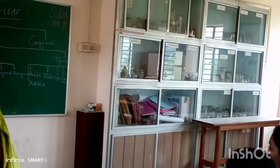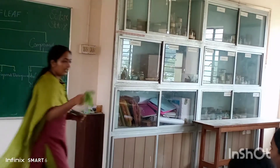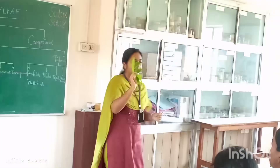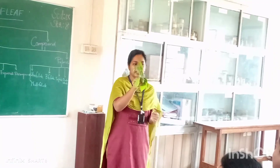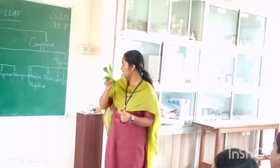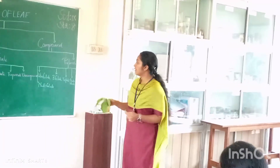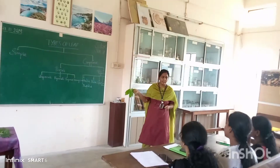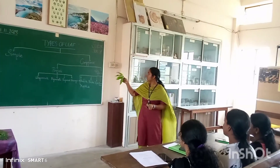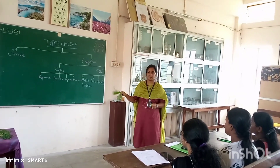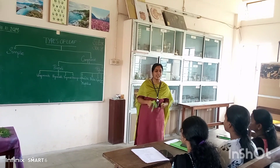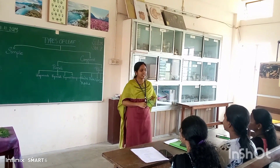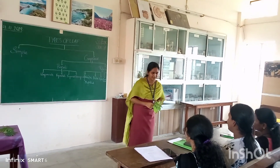Last one is multifoliate. Multifoliate means more than four leaflets are arranged at the top of the petiole. Today we completed the types of leaves: simple and compound. I hope you understood the topic.